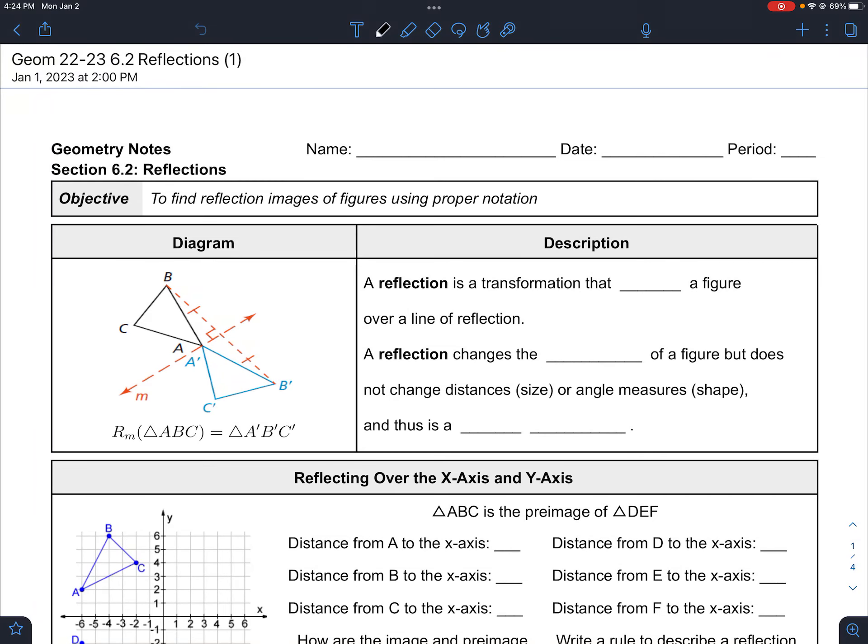All right, we're going to talk about reflections here. So a reflection is a transformation, a movement that's also a rigid motion, meaning that it can be done by cutting out a sheet of paper and moving the sheet of paper.